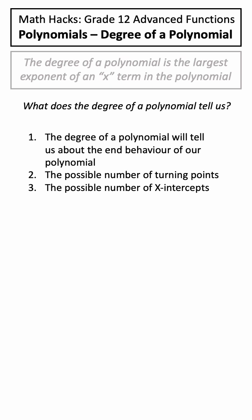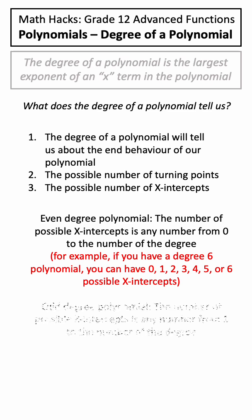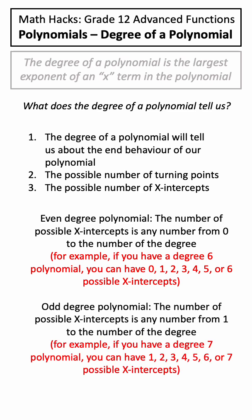Finally, the degree will also tell us the number of possible x-intercepts. For an even degree polynomial, the number of possible x-intercepts is any number from 0 to the number of the degree, and for an odd degree polynomial, the number of possible x-intercepts is any number from 1 to the number of the degree.